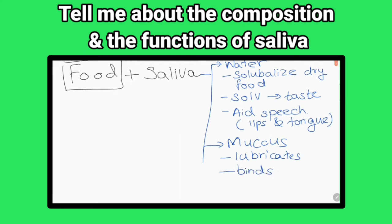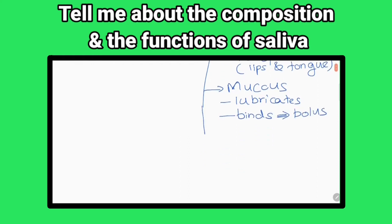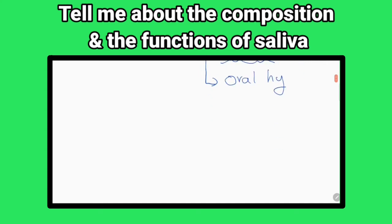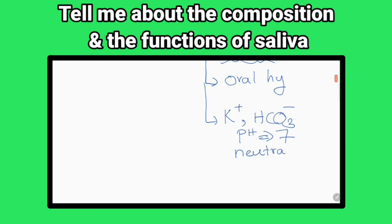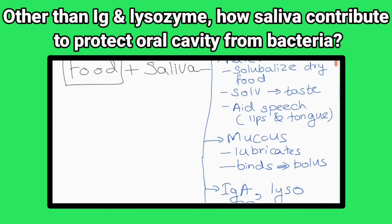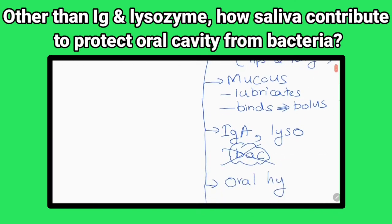Immunoglobulin A and lysozyme protect the oral cavity from bacteria. Saliva is important for oral hygiene, keeping the mouth and teeth clean. Potassium and bicarbonate ions are present in saliva; they maintain oral pH at about seven and neutralize gastric acids. Amylase in saliva initiates the digestion of starch.